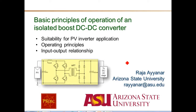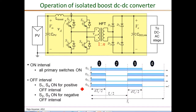This is a continuation of our discussions on the isolated boost DC-DC converter, specifically for applications in PV string inverters. What we have seen in the previous video is that in the isolated boost DC-DC stage we have four distinct sub-intervals in each switching period. In intervals one and three, this is similar to the on-interval of the non-isolated basic boost, where the inductor is connected across the input, thereby increasing its current and therefore the stored energy.